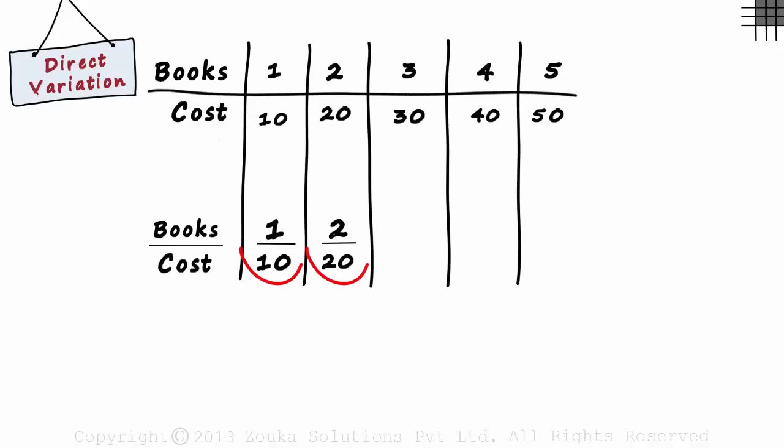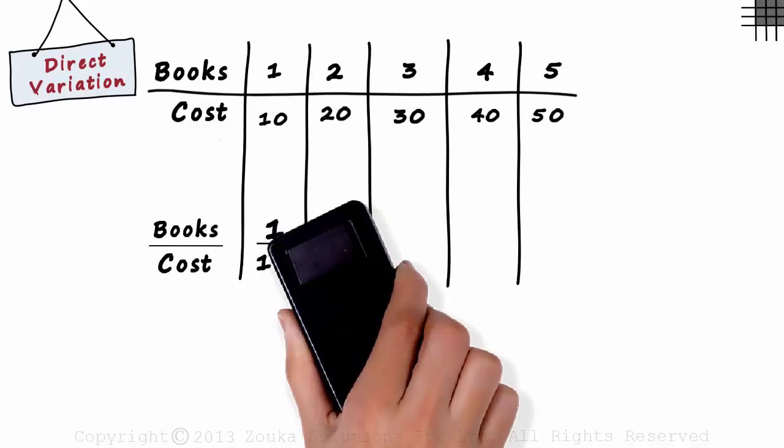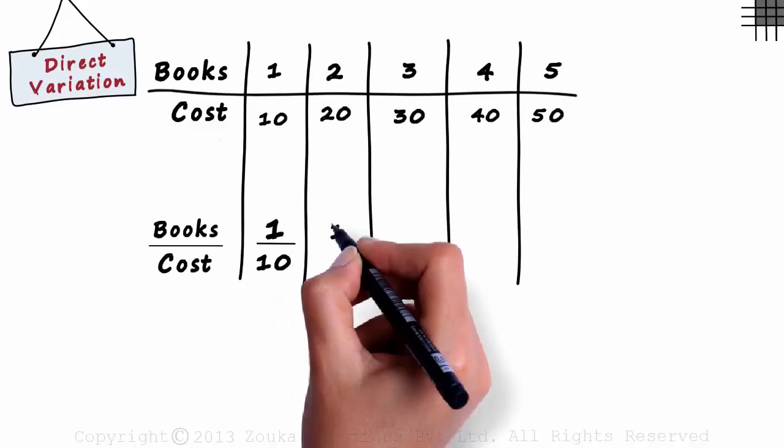Look at these two ratios carefully. What's special about them? Yes, they are the same. This ratio can be written as 1 by 10 if the numerator and the denominator are divided by 2. So let's erase this and write this as 1 by 10.